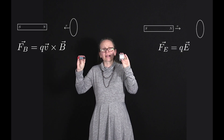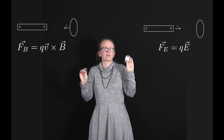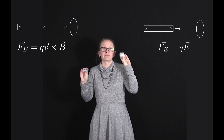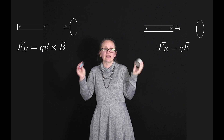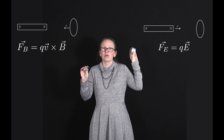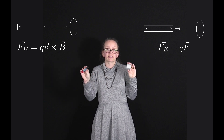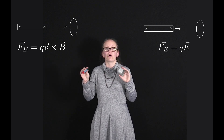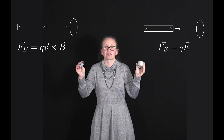We saw that if the magnet moves towards the coil with the same relative speed, once again we get the same induced current. However, in this case the force acting upon the electrons in our loop is the electric force, described by the equation f equals Eq, where E is the electric field induced by the changing magnetic flux. So whether the force is interpreted as a magnetic force or an electric force depends upon the frame of reference of the observer.